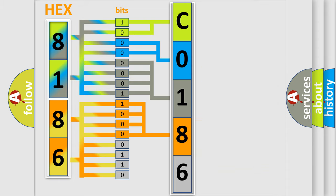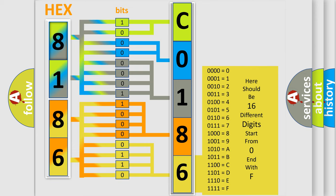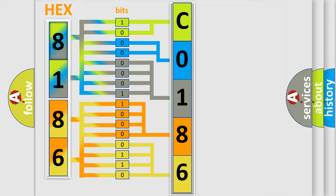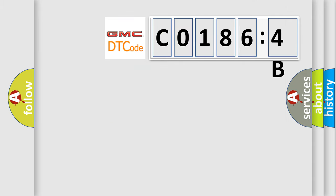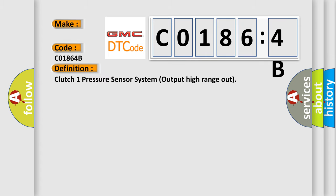A single byte conceals 256 possible combinations. We now know in what way the diagnostic tool translates the received information into a more comprehensible format. The number itself does not make sense to us if we cannot assign information about what it actually expresses. So, what does the diagnostic trouble code C01864B interpret specifically for GMC car manufacturers?